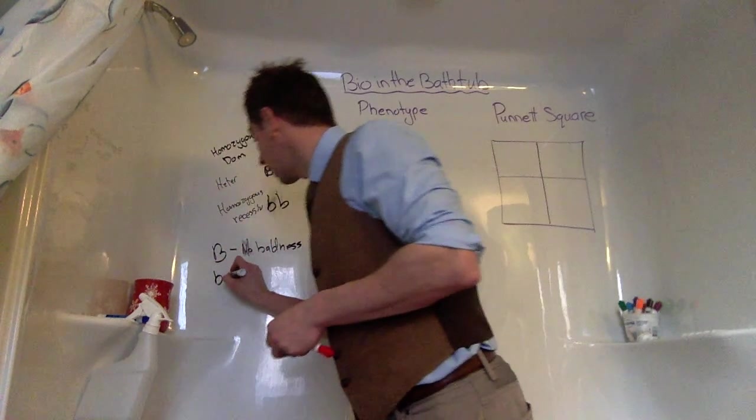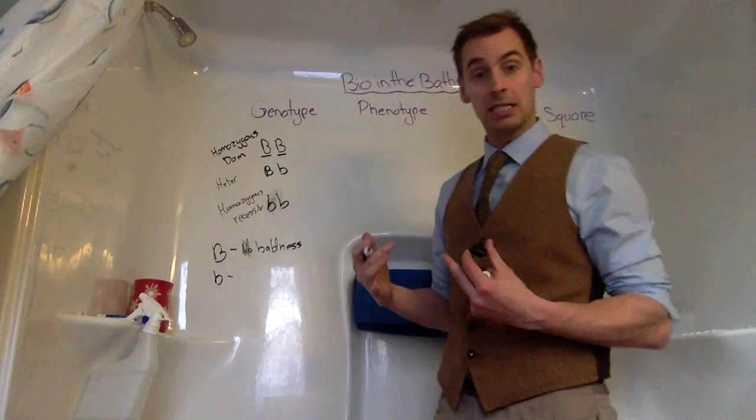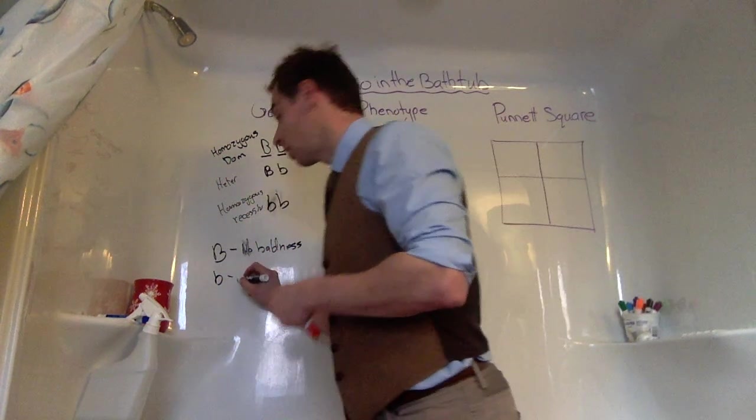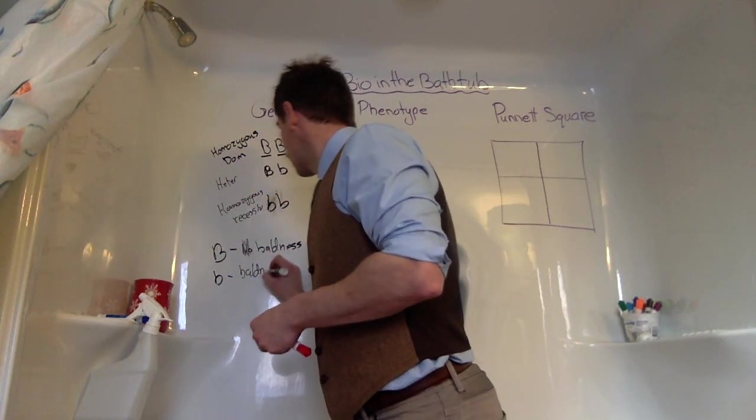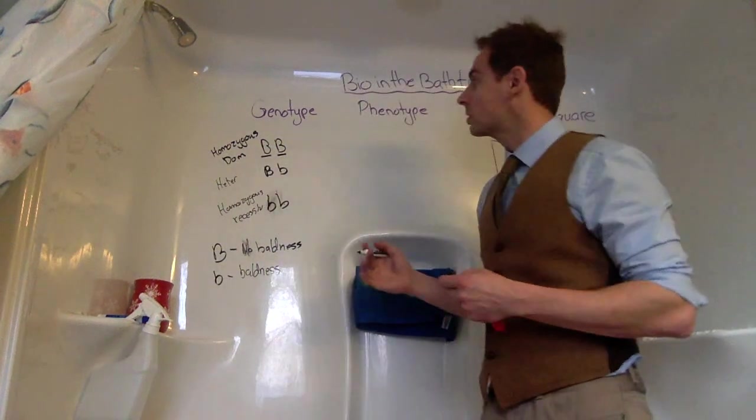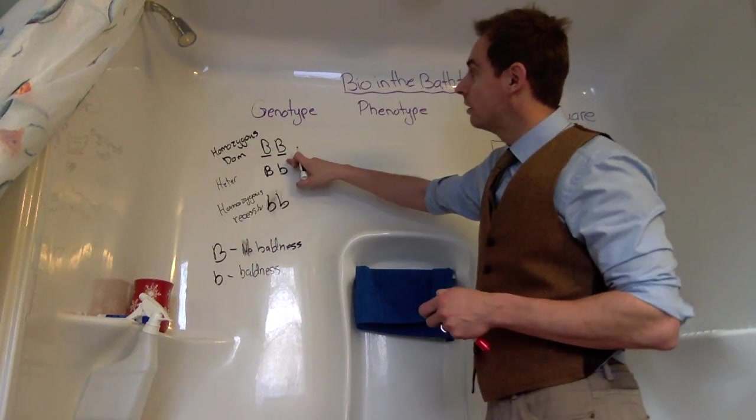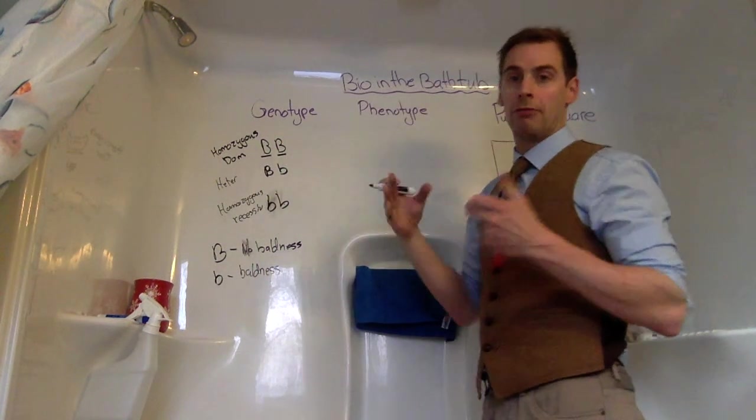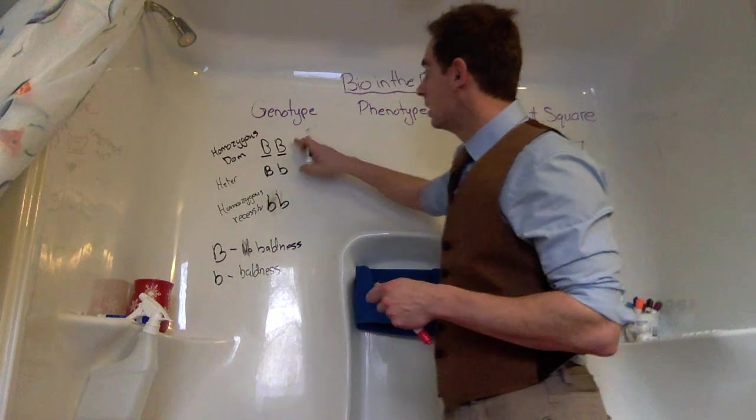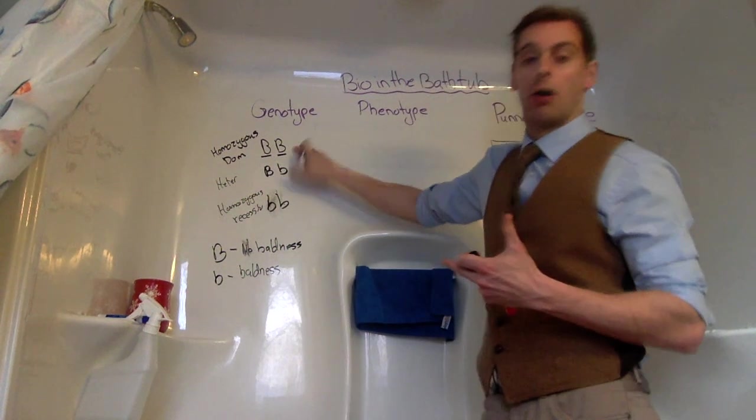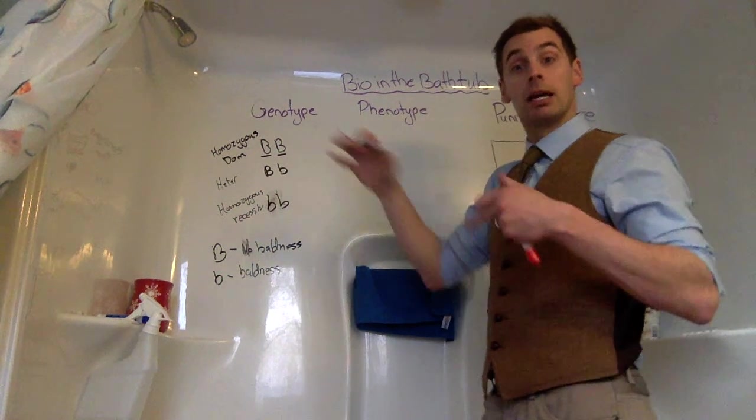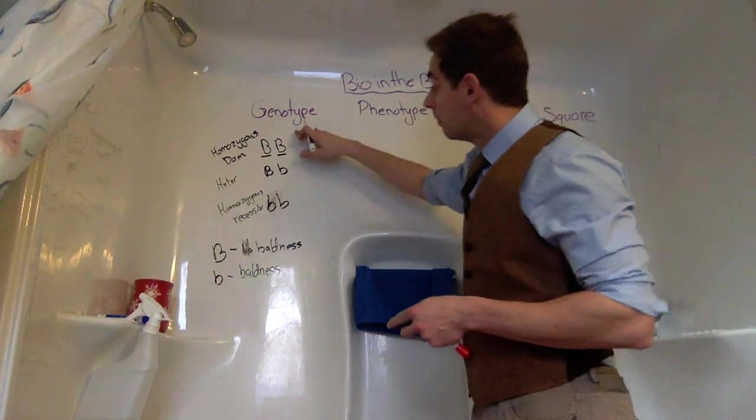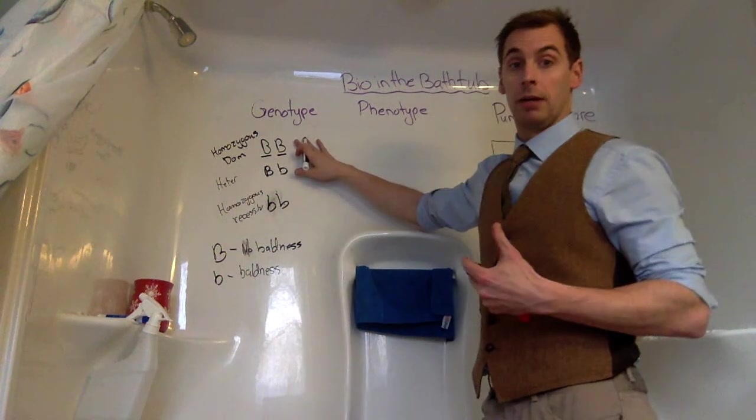If we have a lowercase b, that is the recessive allele for baldness. Now, what we're focusing on specifically is complete dominance. There are three other ones we'll get into, incomplete dominance and co-dominance, later on in later videos. But for right now, we're talking about complete dominance.